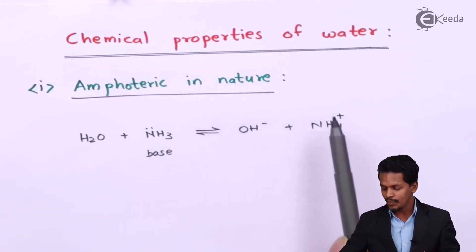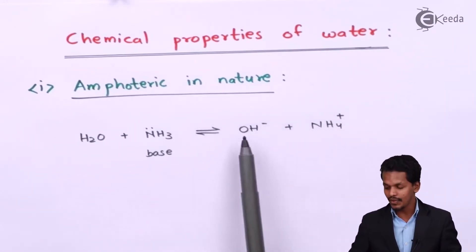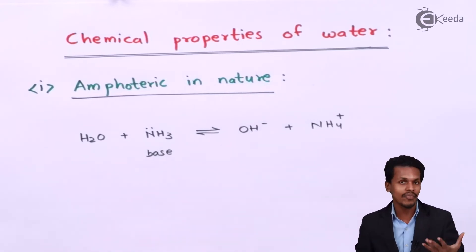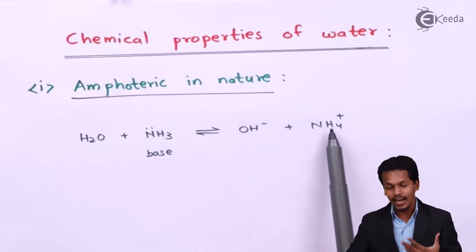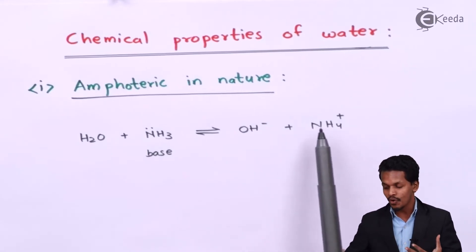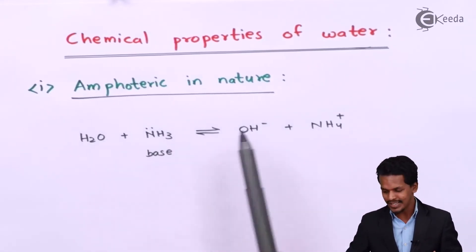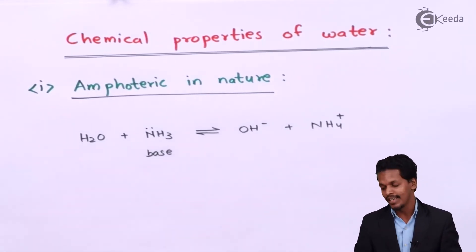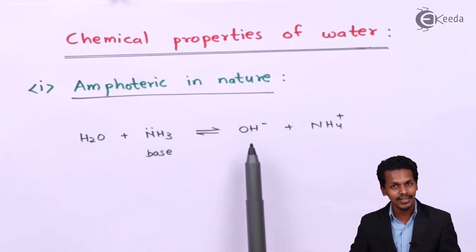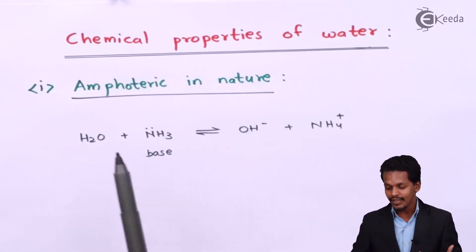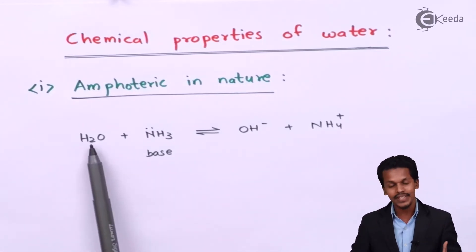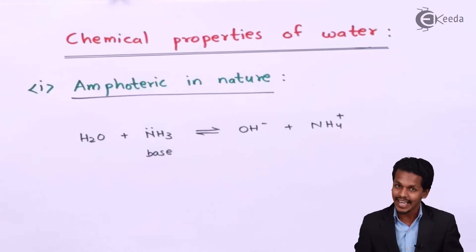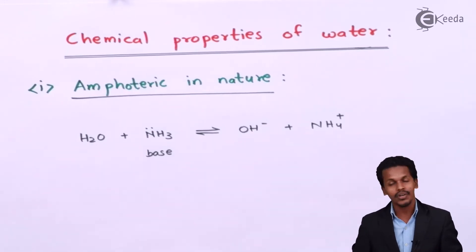In this product, OH⁻ has a lone pair of electrons on it, and that lone pair can combine with the hydrogen of NH4⁺ — the ammonium ion — to reform the water molecule, because an equilibrium is established. So OH⁻ is acting like a base here. Therefore, whenever H2O is treated with a base stronger than it, H2O acts like an acid.